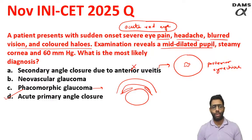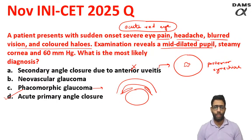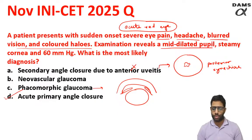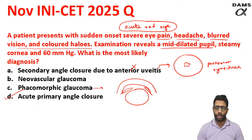Regarding treatment, they can also ask you about intravenous mannitol given instantaneously, plus pilocarpine, because the treatment of choice is laser iridotomy. That is the first question — acute primary angle closure glaucoma.